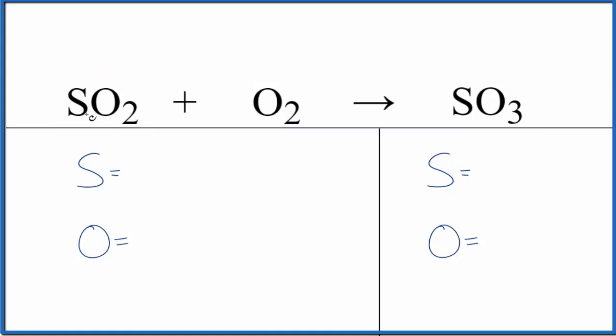Let's balance the equation. We have one sulfur and then two oxygens. Make sure you count these two though. Those are important. Total of four. Product side, one sulfur and three oxygens. So we have a three here and a four over here.